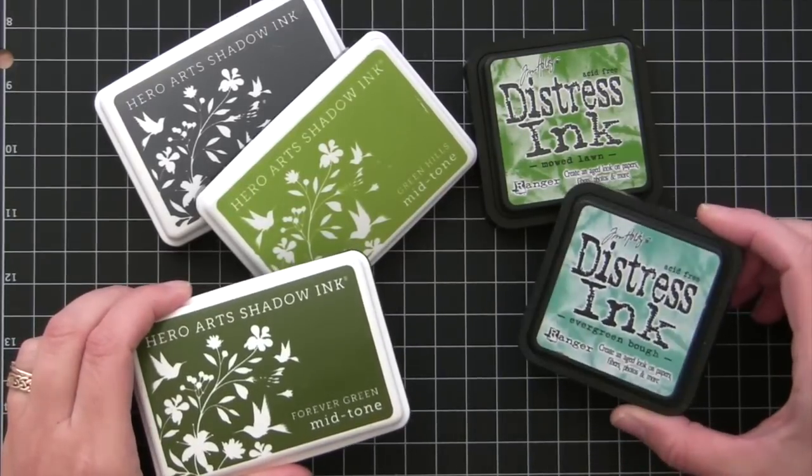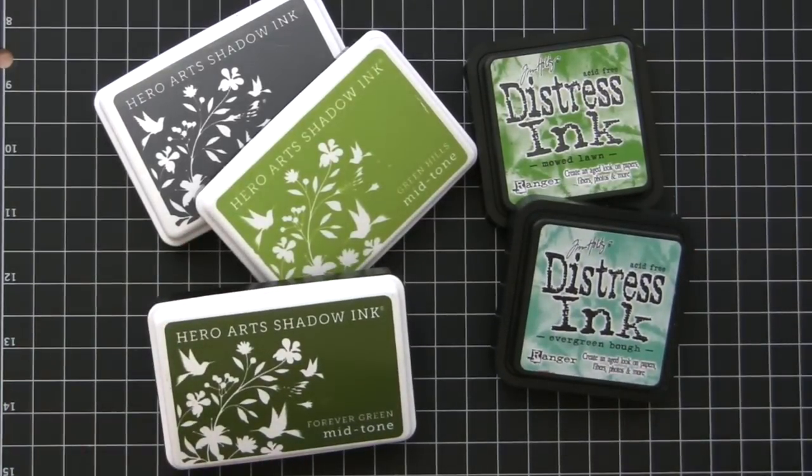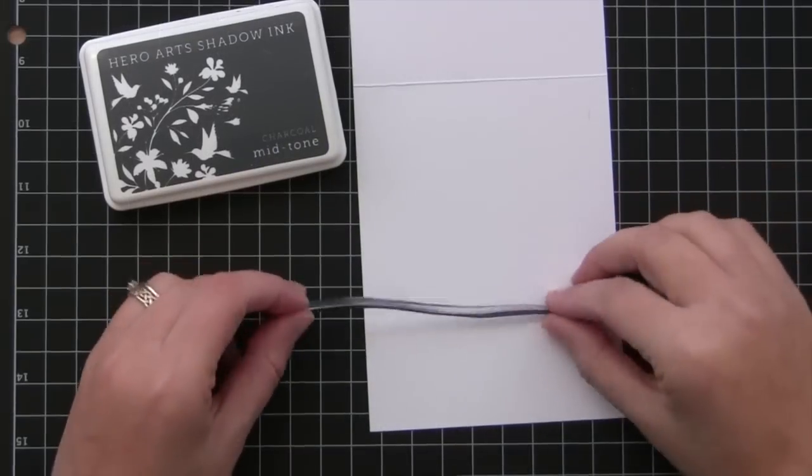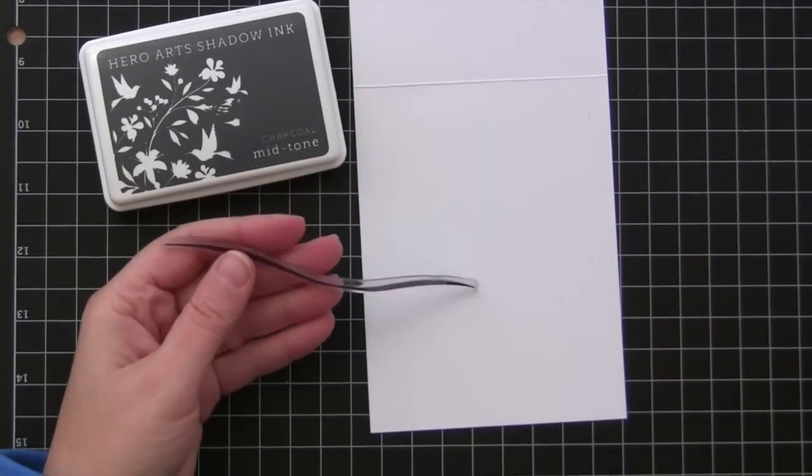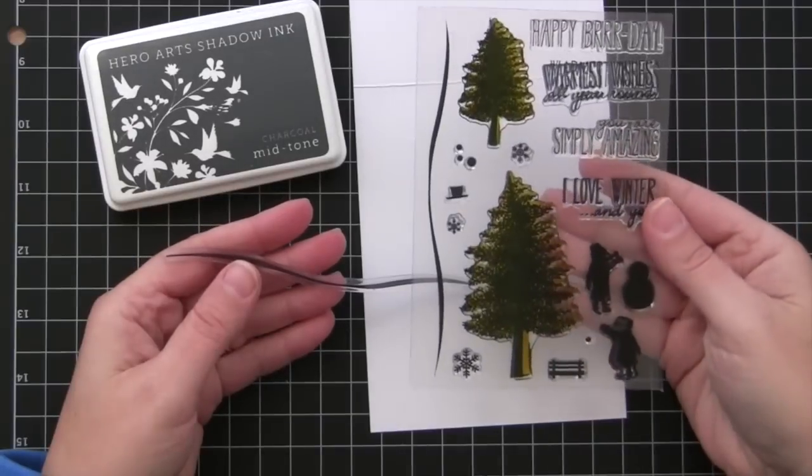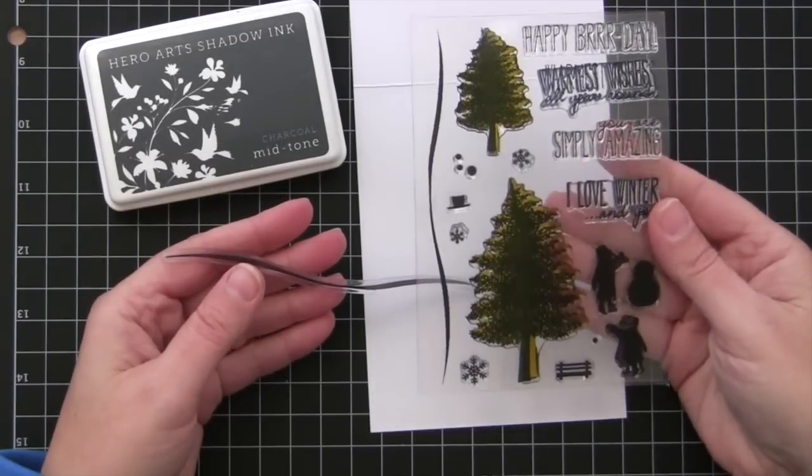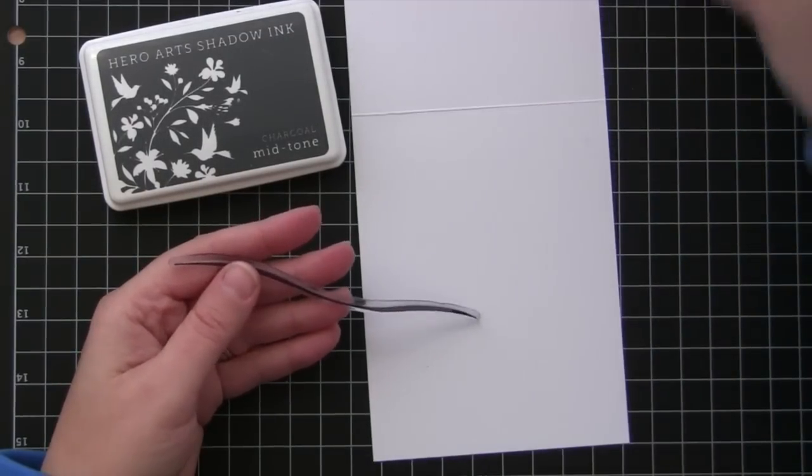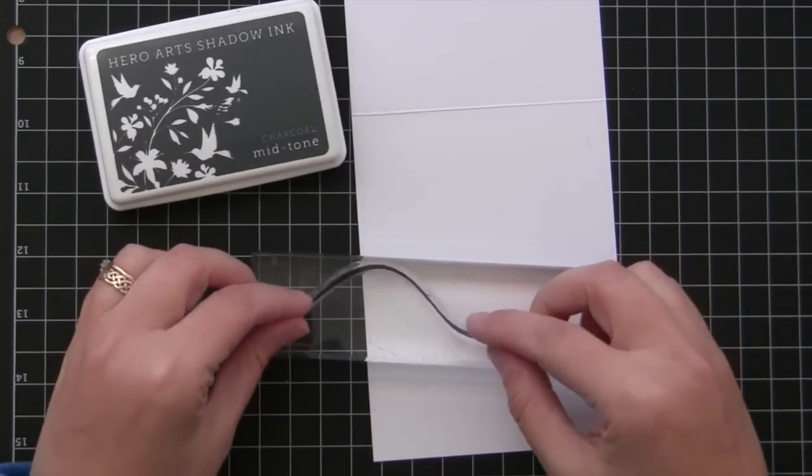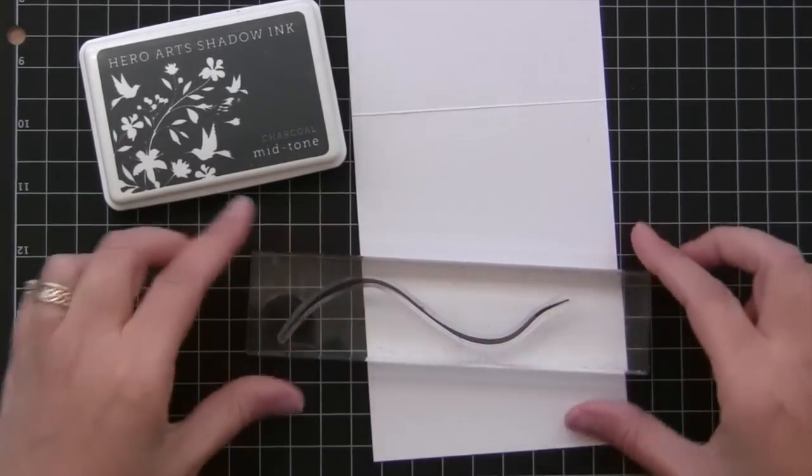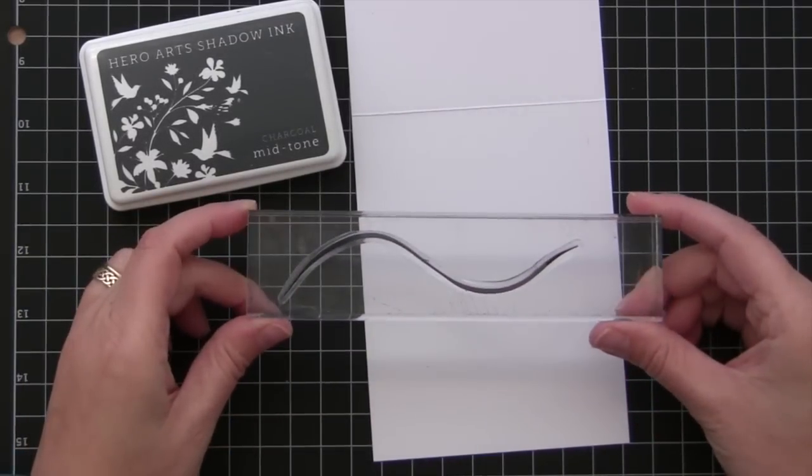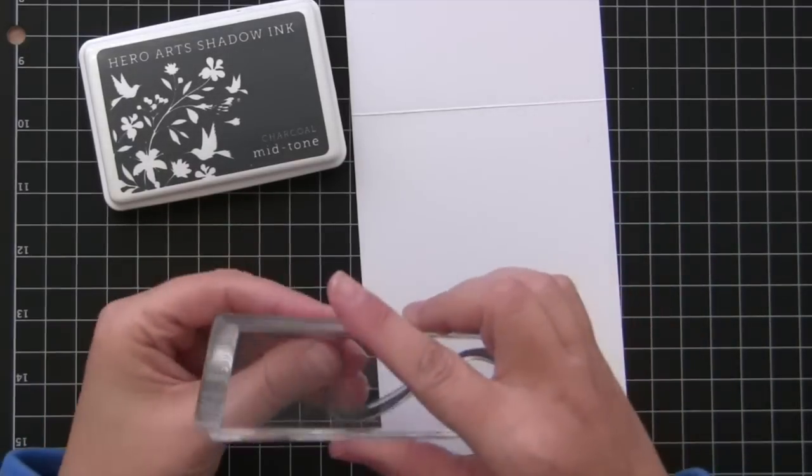First I wanted to share some stamping tips for using long narrow stamps like this snowbank that comes in the set. You can bend these stamps like so and then you can have a curve. This is kind of handy if you have a message and you want to curve it around, say, a circle or something.